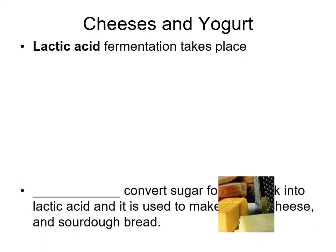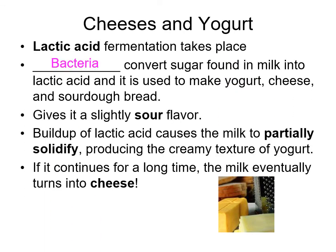Cheeses and yogurt are also products of fermentation. Lactic acid fermentation takes place in these cases: certain bacteria convert the sugar found in milk into lactic acid, which is used to make yogurt, cheese, and sourdough bread, giving them a slightly sour flavor. The buildup of lactic acid in milk causes it to partially solidify, producing the creamy texture of yogurt. If it continues for a long time, the milk eventually turns into cheese.